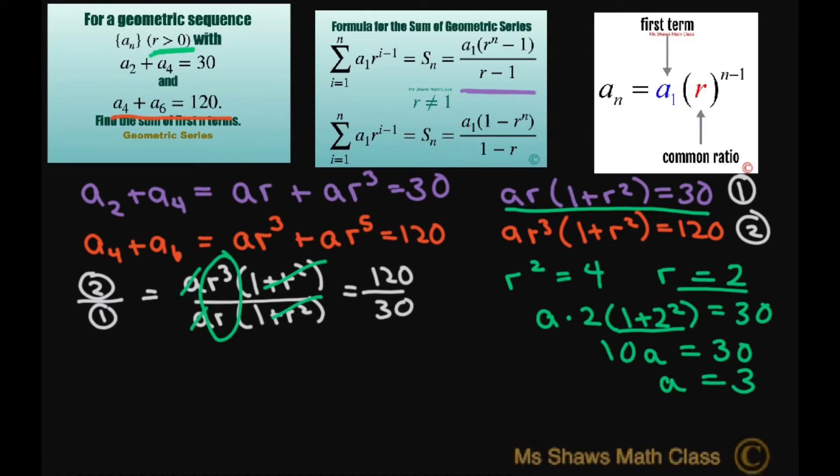So now we have our common ratio and our first term. Therefore, let's find the number of terms. Let's use this formula to find the number of terms. So aₙ equals your first term times your common ratio to the power of n minus 1. Now this is going to be 2 to the power of n minus 1. It's like saying 3 times 2 to the n divided by 2 to the power of 1.